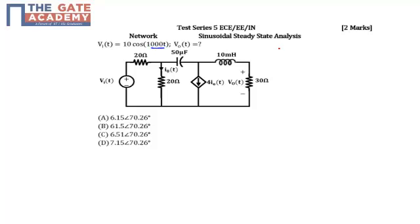So first, find out the value of our reactive element. So my XL will be equal to J omega L. Omega is 1000, L is given as 10 millihenry. So basically my XL will be equal to 10J ohms.